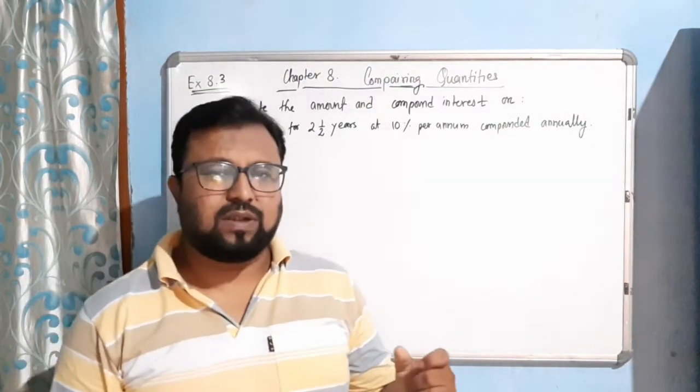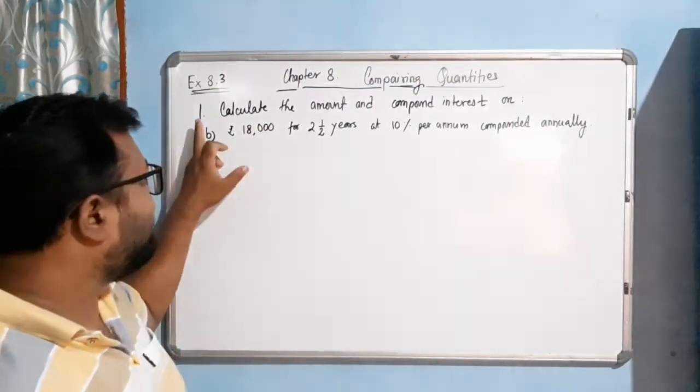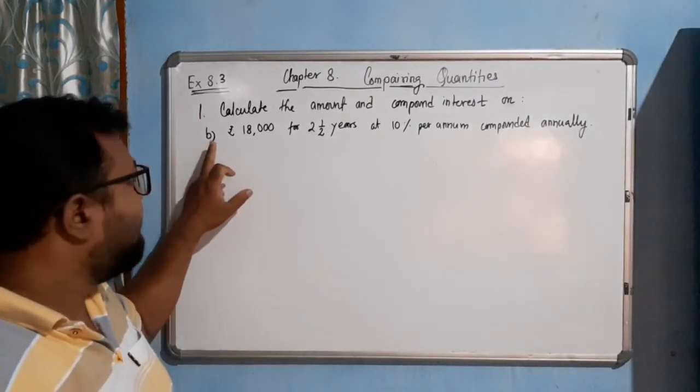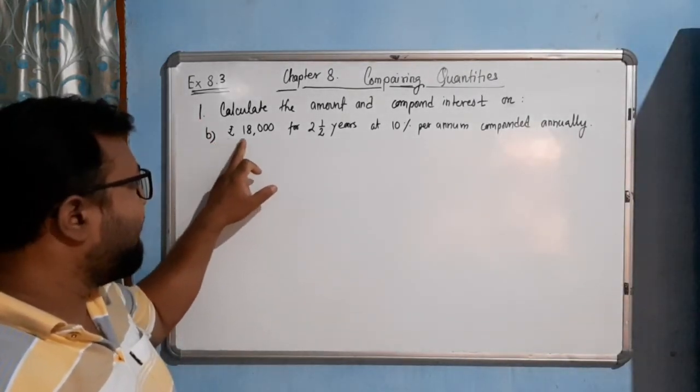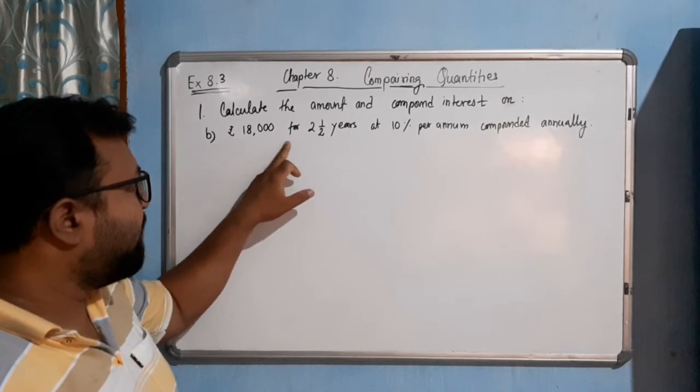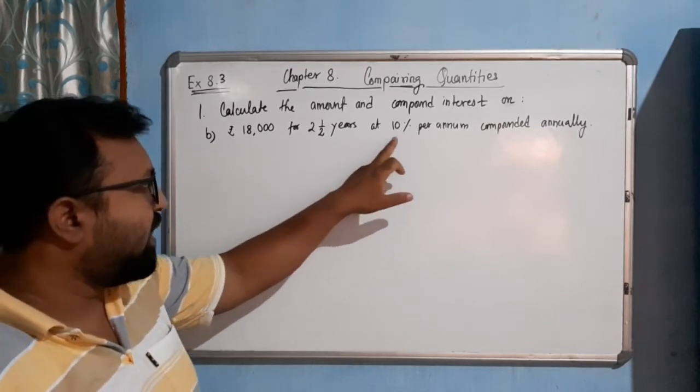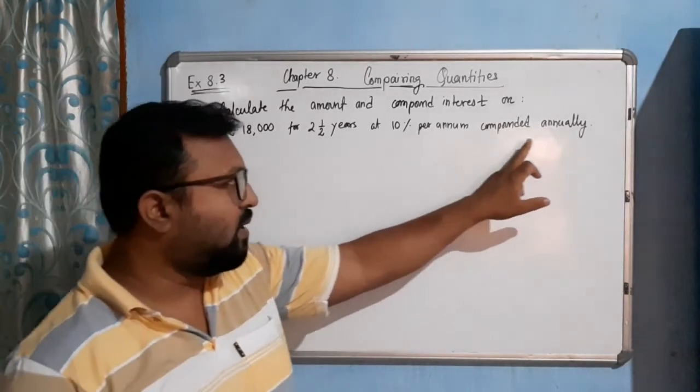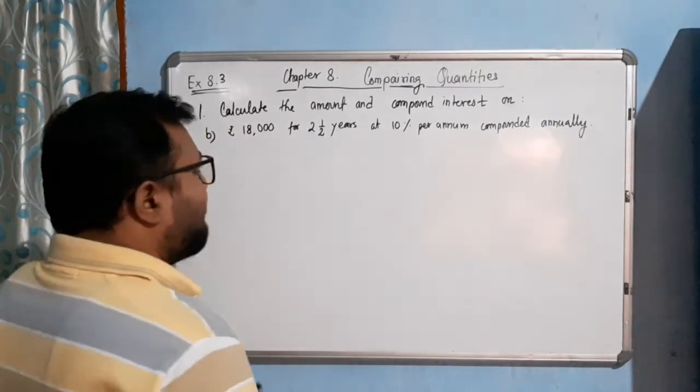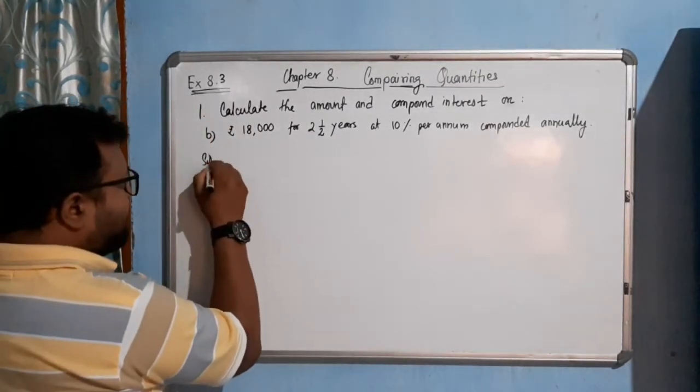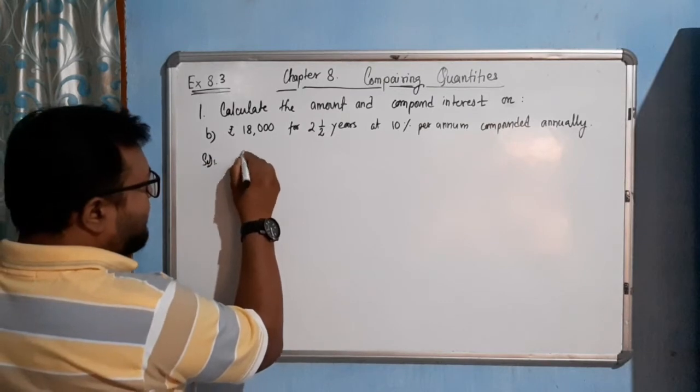Hello students, now come to the next question, question number 1(b). Here, ₹18,000 for two and a half years at 10% per annum compounded annually. So we will write the solution.